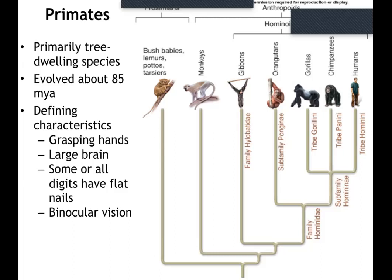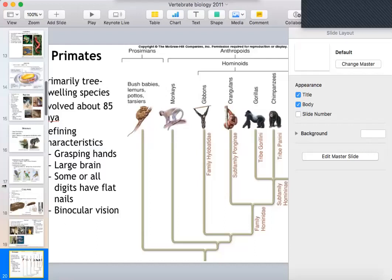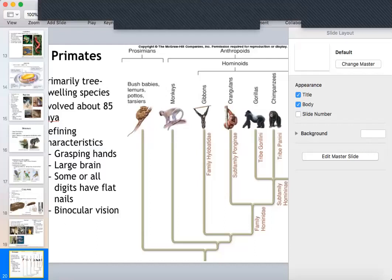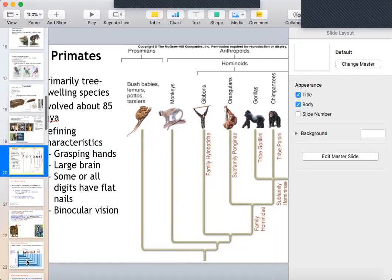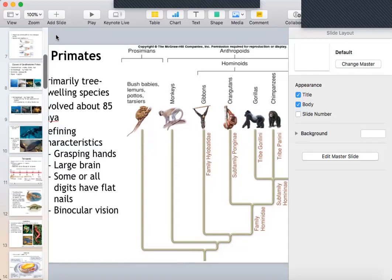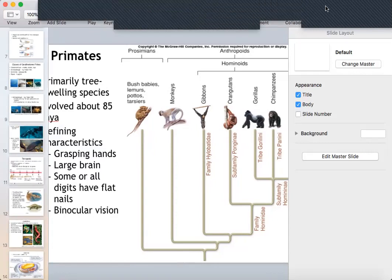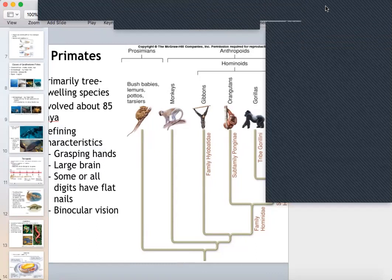Binocular vision is also important in primates — both eyes face forward, which helps you zero in on your food. Predators have that too. Herbivores, on the other hand, tend to have their eyes on the sides of their heads so they can watch for danger. That concludes the diversity lecture. We're going to look at a couple of animal examples, then take a break, and you can watch some animal videos in the lab.